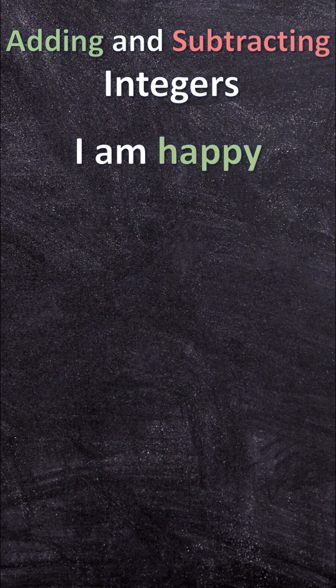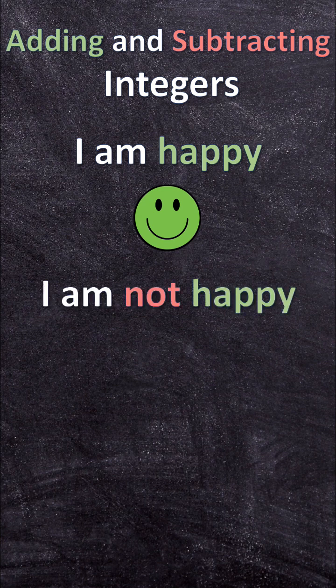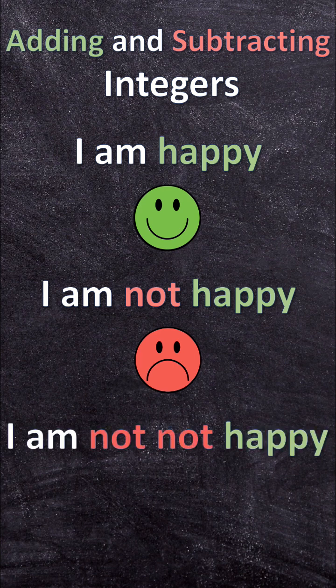When I have a positive sentence, like 'I am happy,' that means I'm positive — I am happy. But when I take that positive sentence and add a negative, 'I am not happy,' that means it's negative — I am not happy. But when I take this negative sentence and add another negative, 'I am not not happy,' that means I am happy again.